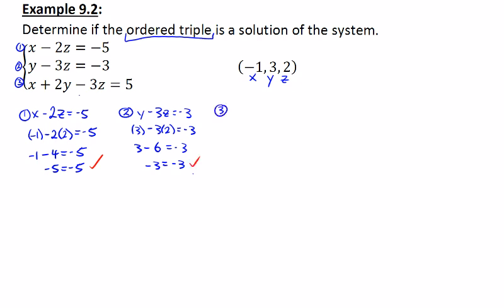And the third equation, x plus 2y minus 3z is equal to 5. I'm going to have to use all three values on this one. So negative 1 plus 2 times 3 minus 3 times 2 is supposed to equal 5.